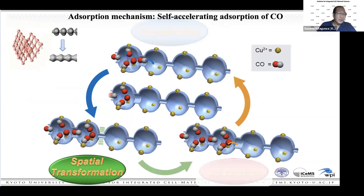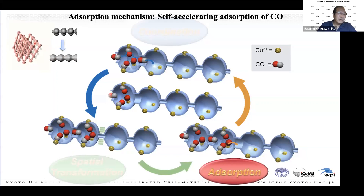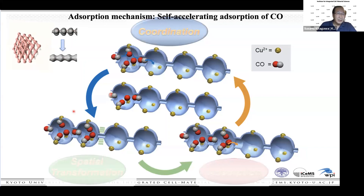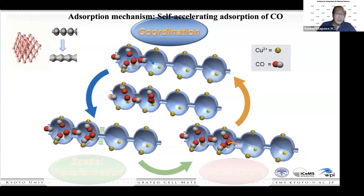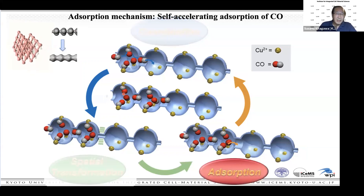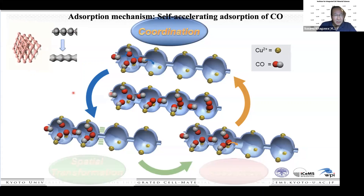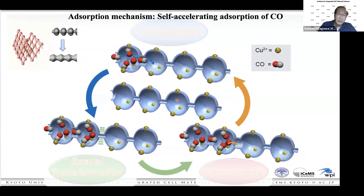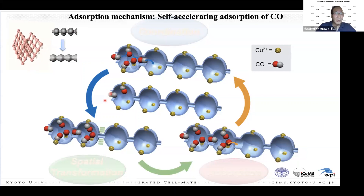When CO gas molecules are accommodated, they coordinate to copper, inducing gate opening and abrupt introduction of CO. But nitrogen cannot coordinate to the copper site, so nitrogen cannot open the gate. This is the mechanism — we call it self-accelerating adsorption of CO. We can make pellets and place them in a column: CO coordinates to the copper site to open the channel and fill it, then switching the valve releases the CO.